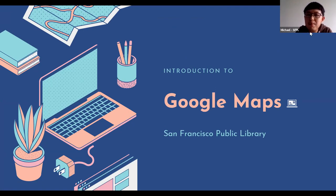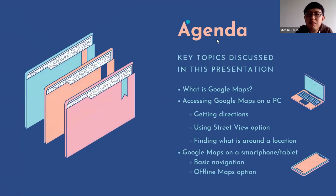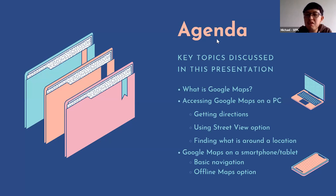Today we're going to go over Google Maps. The agenda for today would be: what is Google Maps, how to access Google Maps on a PC, how to get directions, how to use the street view option, how to find what is around a location, and I'm going to go over Google Maps on a smartphone and tablet, including basic navigation and how to use the offline maps option.